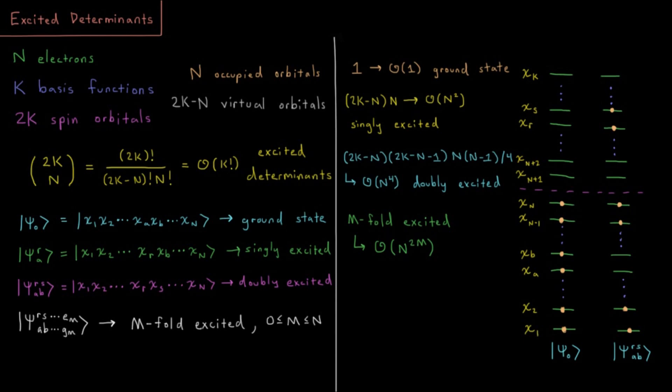In our discussion of Slater determinants, we're now going to move on to think about what are all the possible different ways we could have a Slater determinant occupied based off of all the spin orbitals that are available to us.